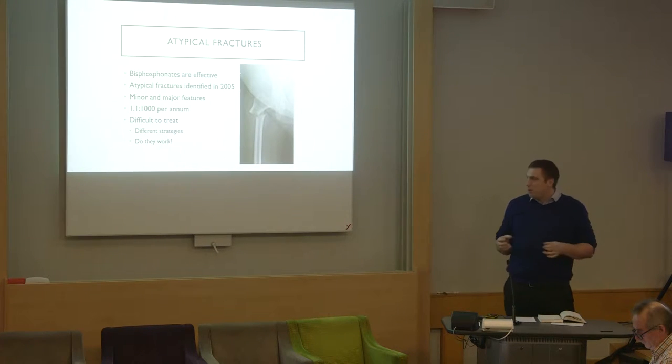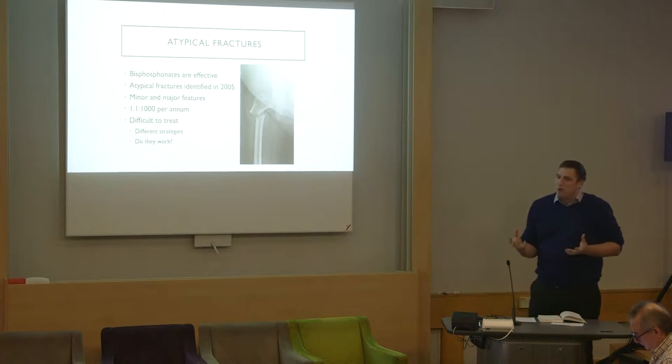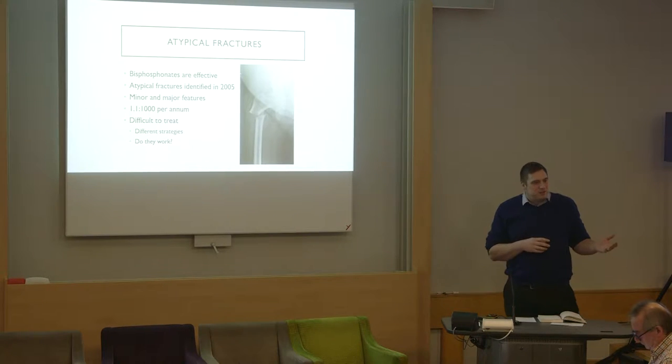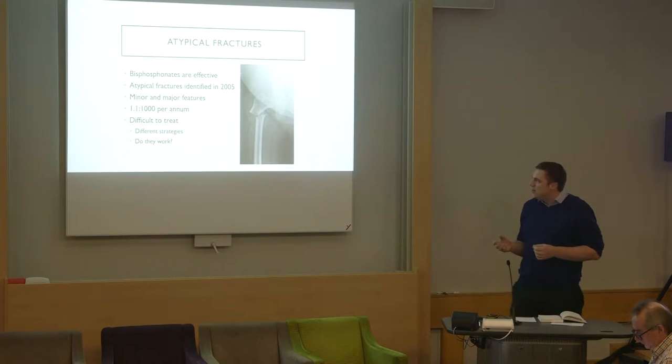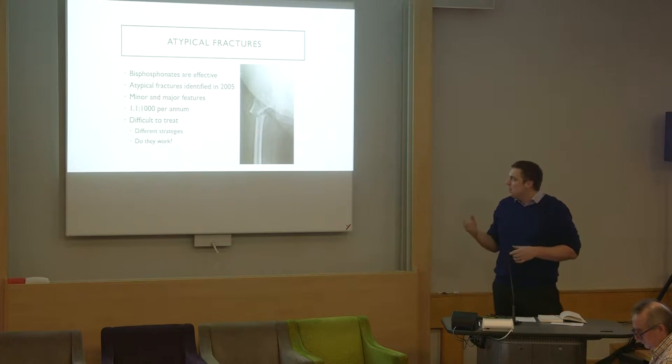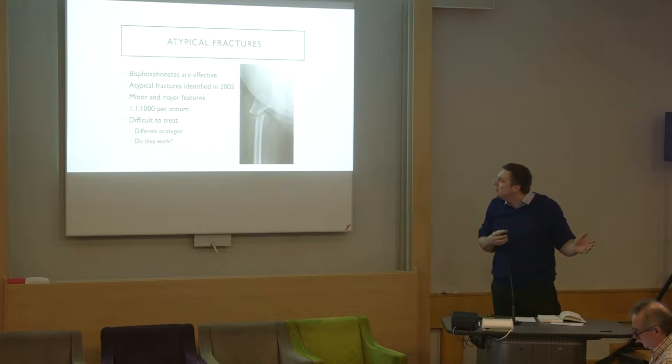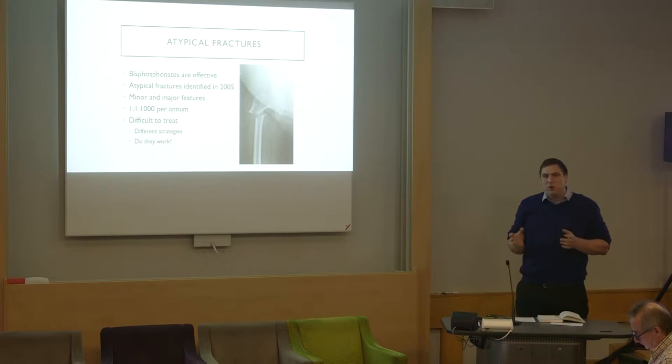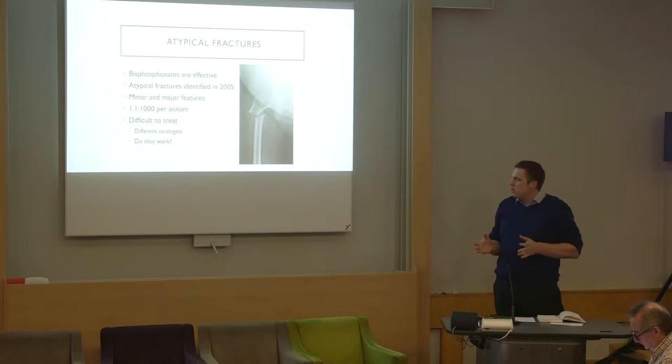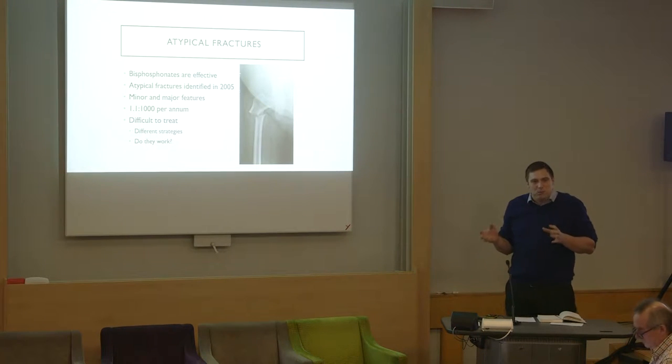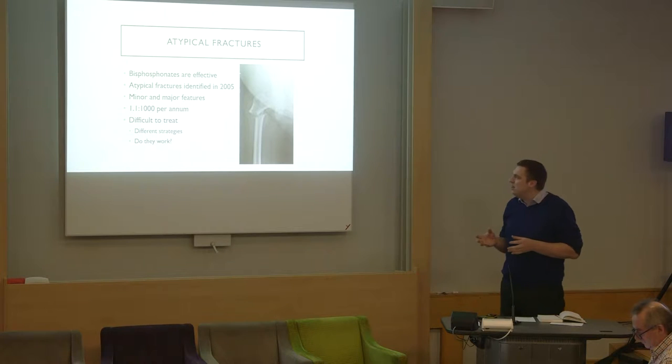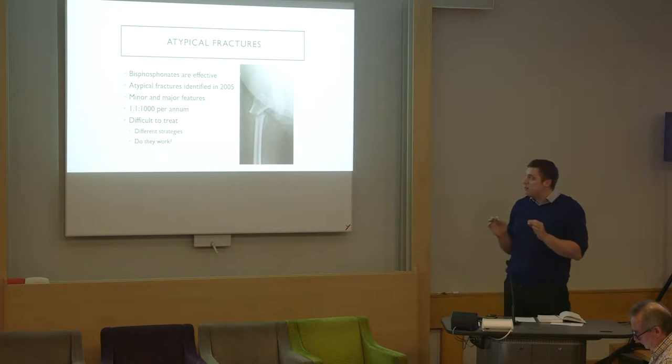And just straw polling one person who I knew, they seemed to be turning up more and more. I'm sure you're aware there are minor and major features that define an atypical fracture. Those were described in 2010 and they're modified in 2014. Essentially, ones that look like that are atypical, everything else isn't. And they're about 1 to 1.1 per thousand per year, and that's certainly what we see in Bristol.